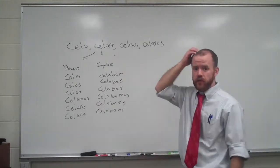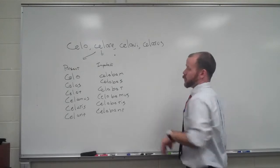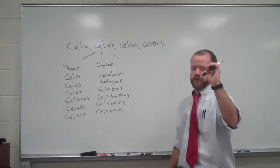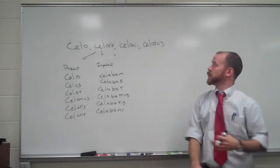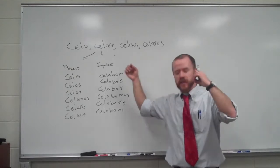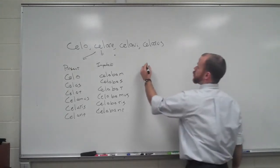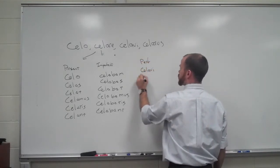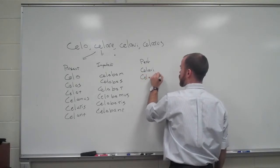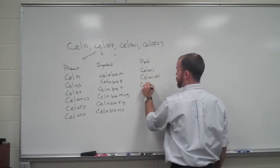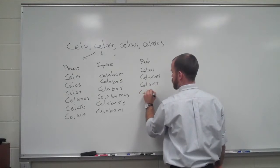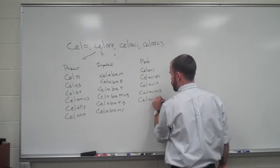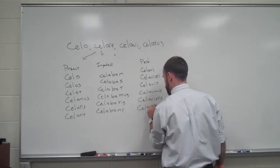Now let's move on to the perfect and the pluperfect. With these two tenses, we're going to use a different principal part to get our stem — it's the third principal part. What we chop off to get our stem is the I. So for the perfect, we have: Kelawi, Kelowisti, Kelowit, Kelowimus, Kelowistis, Kelowuerunt.